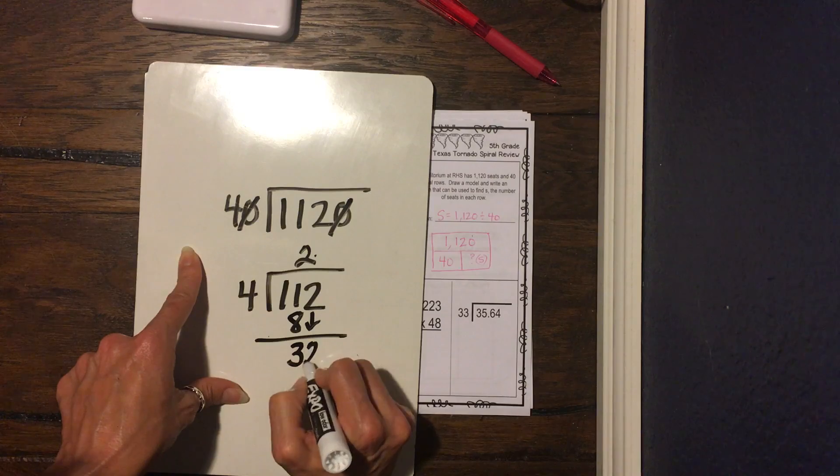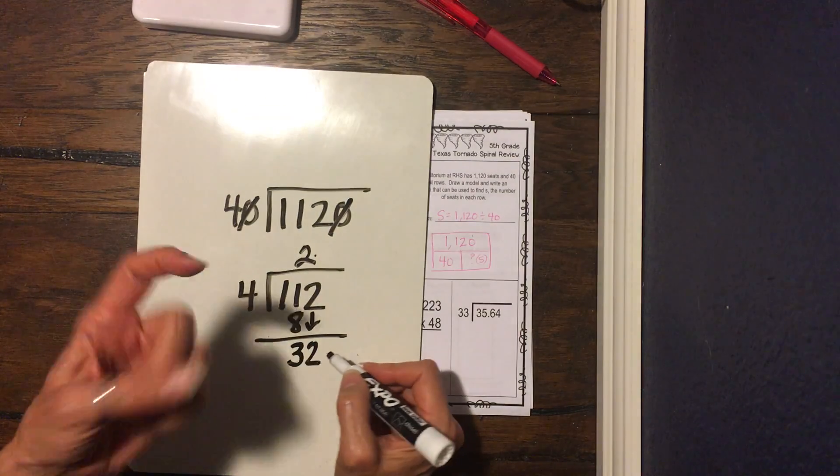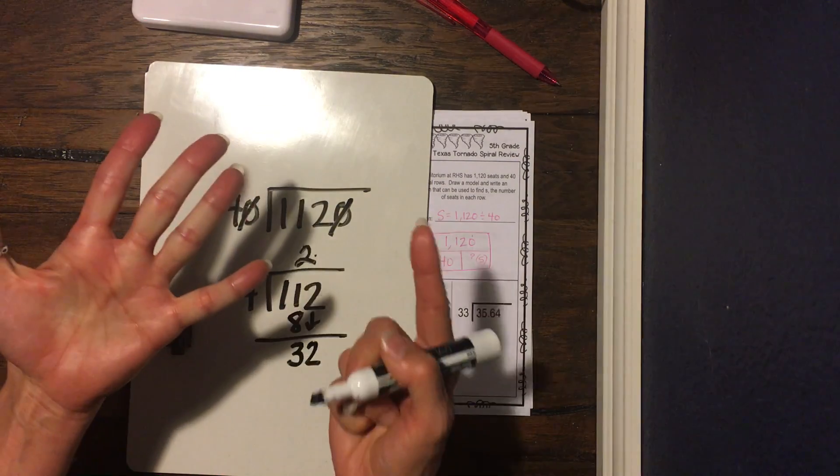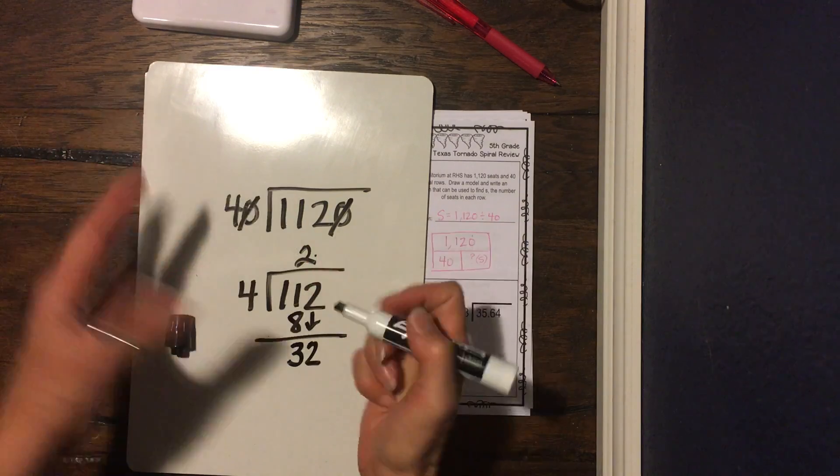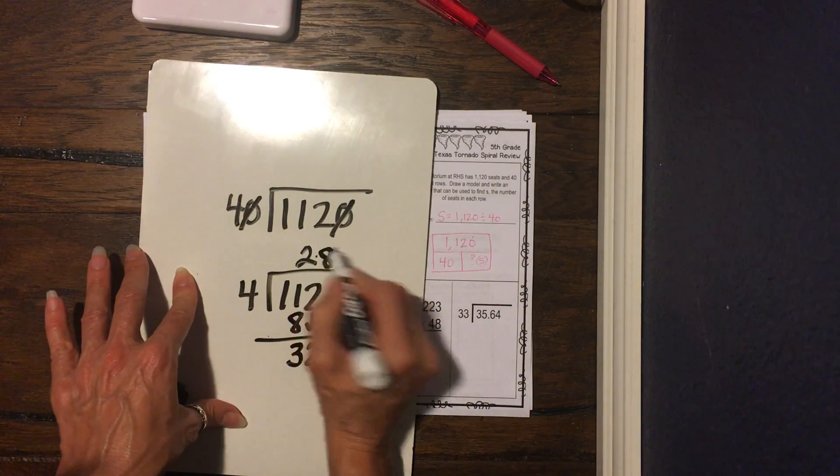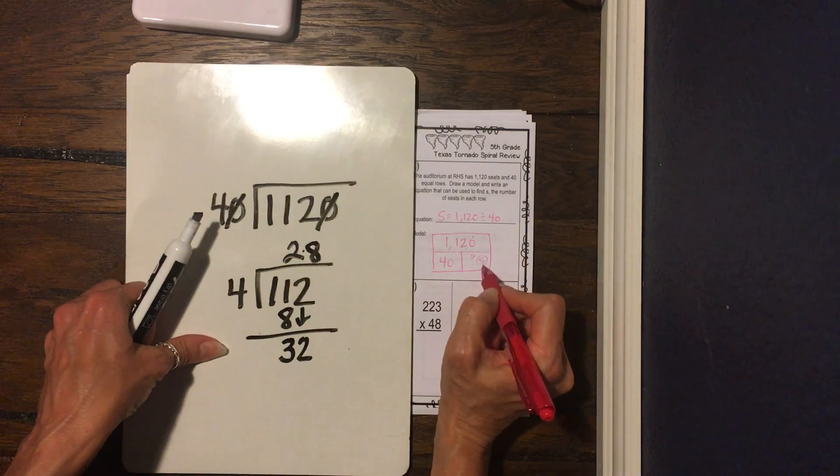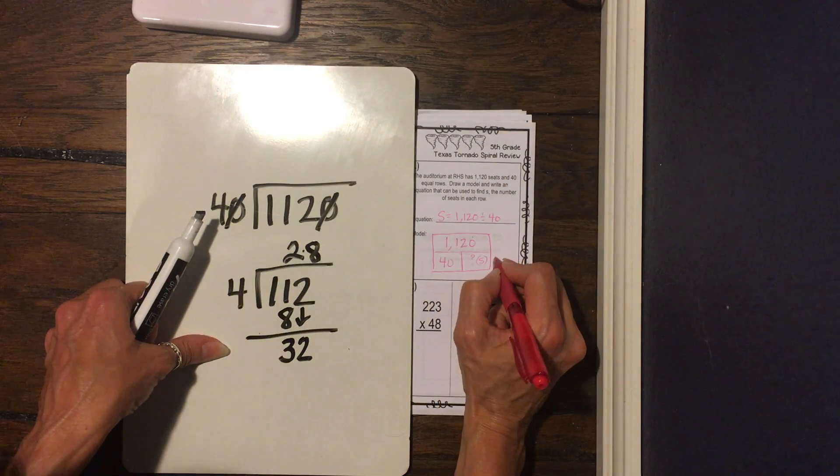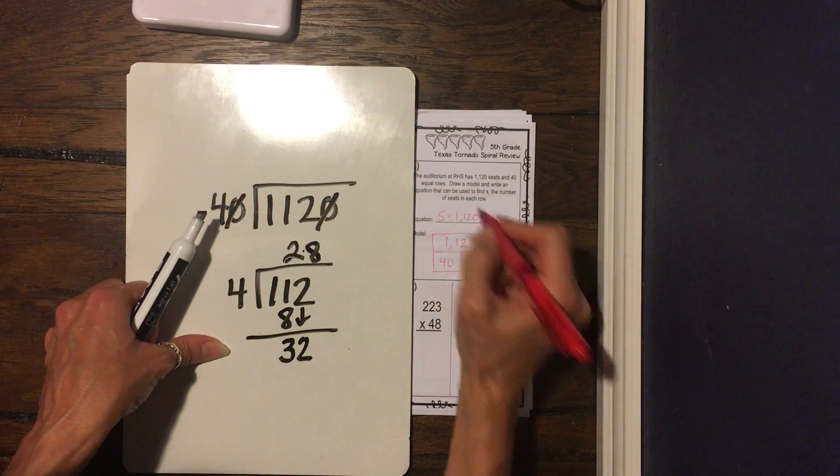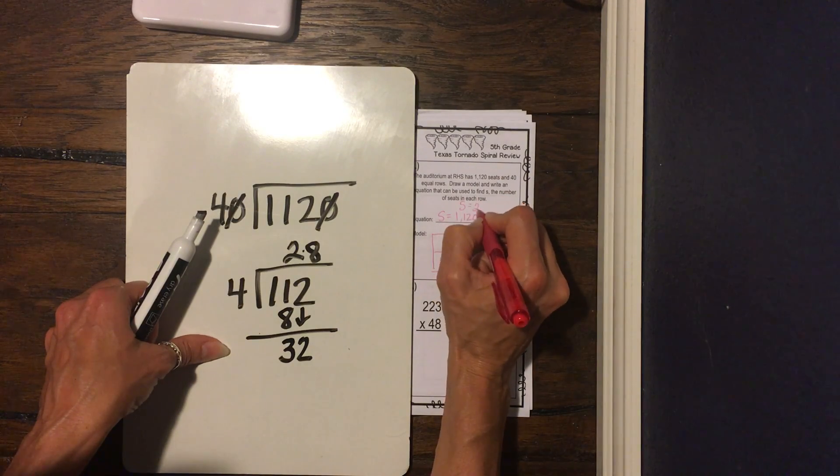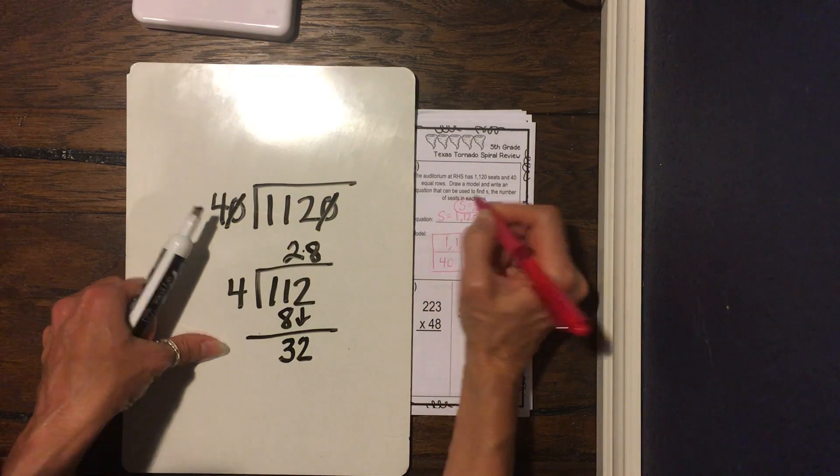We bring down our 2, and 4 goes into 32. 4, 8, 12, 16, 20, 24, 28, 32. So it goes in 8 times. So our zeros canceled each other out. So how many seats are gonna be in each row? Our answer's gonna be 28. So S equals 28. That's our final answer.